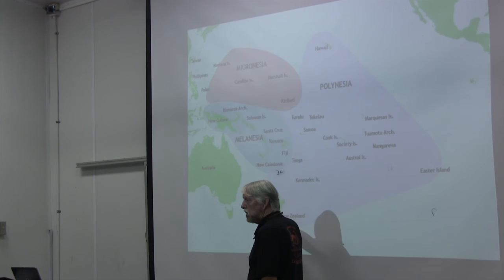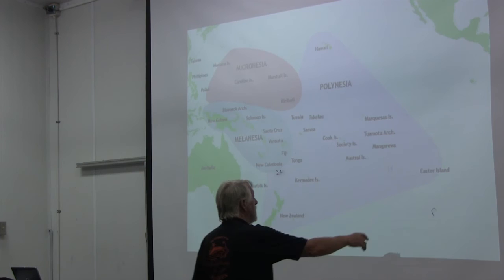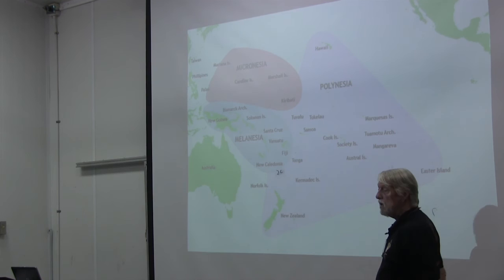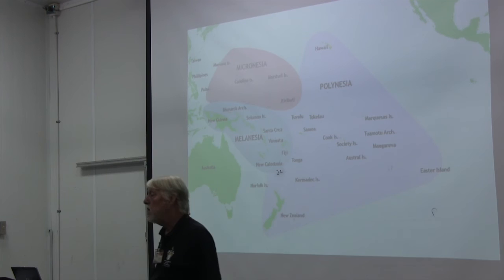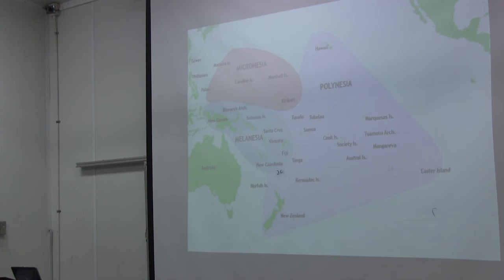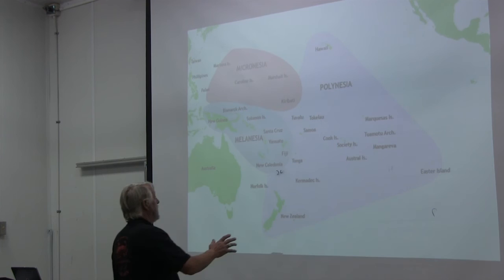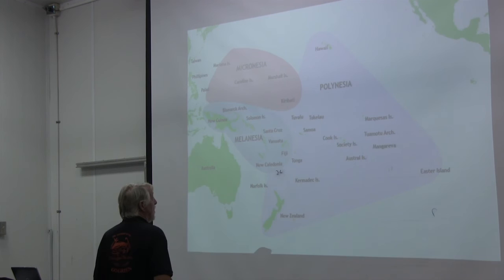The Maori of New Zealand are Polynesians. Easter Island — you've all heard of those whacking big stone things. The Hawaiian Islands are really quite remote, and Mike is going to be lecturing on the Hawaiian Islands, what sets them apart and why their biota is very different — their remoteness has a lot to do with it. We've got an aerial graduate student from Tonga.